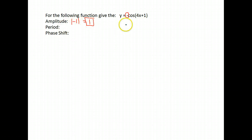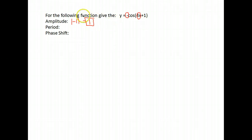For the period, remember we take the number that's in front of the x and divide the normal period by that number. The normal period for cosine is 2π. So we're going to take 2π and divide by 4. 2π divided by 4 gives us π over 2 when reduced.